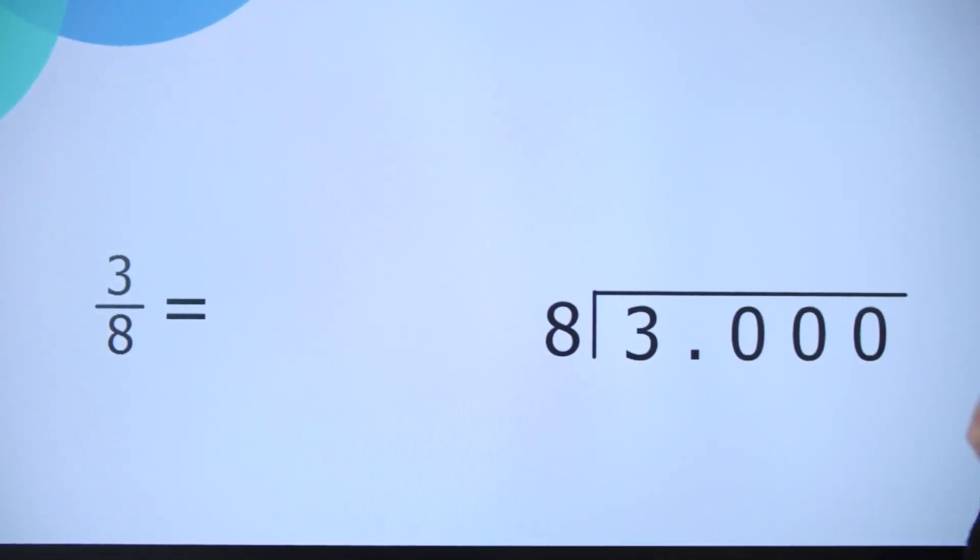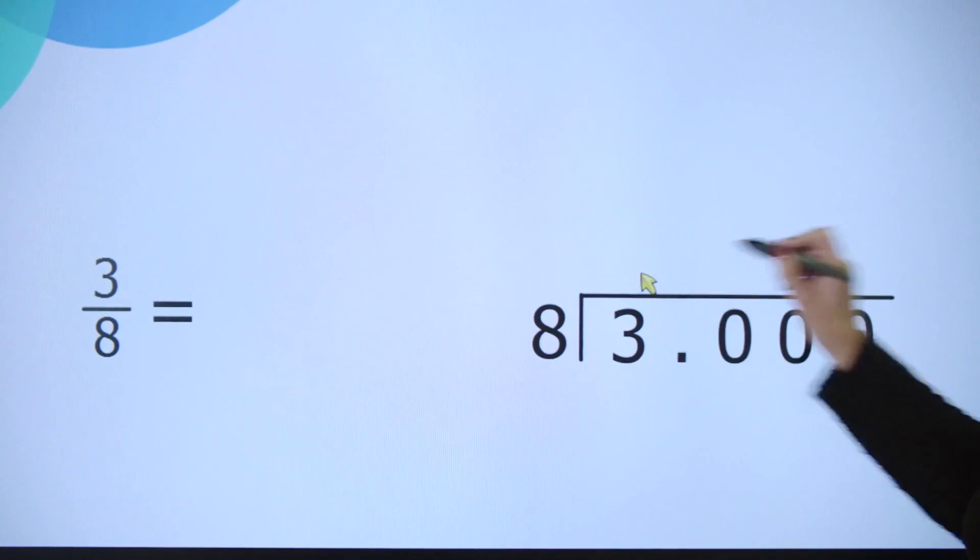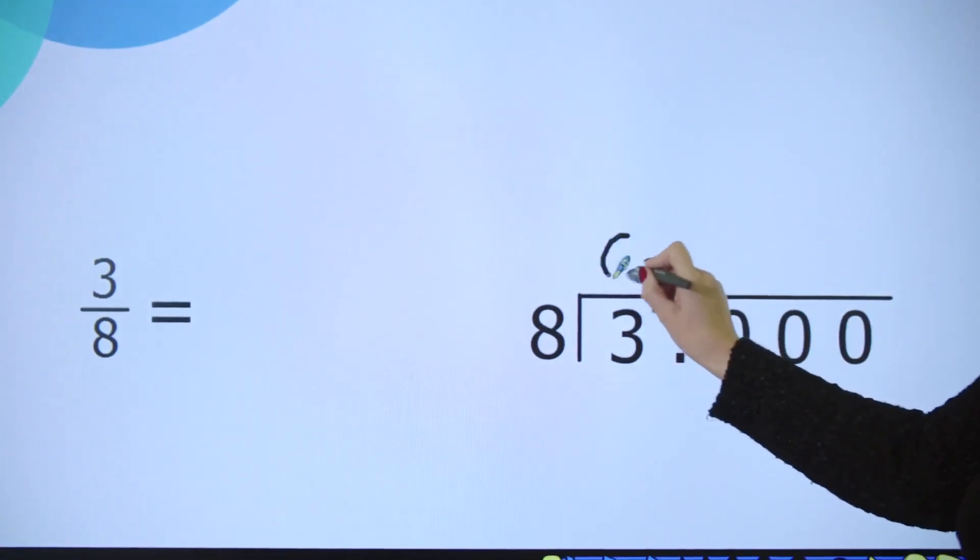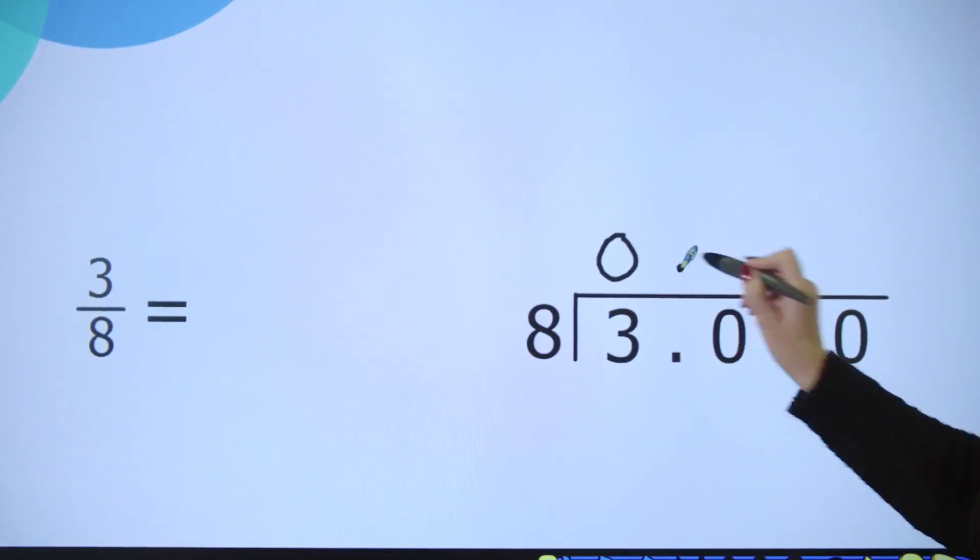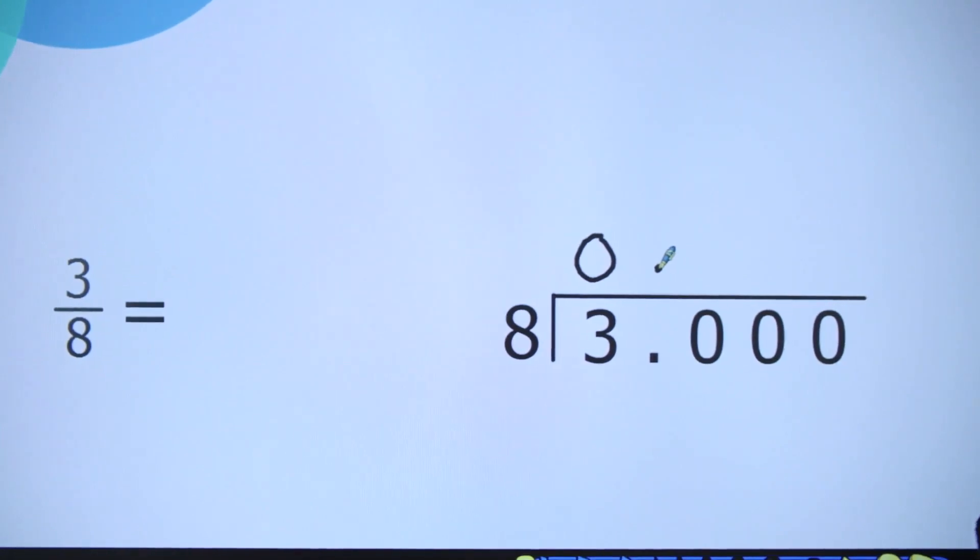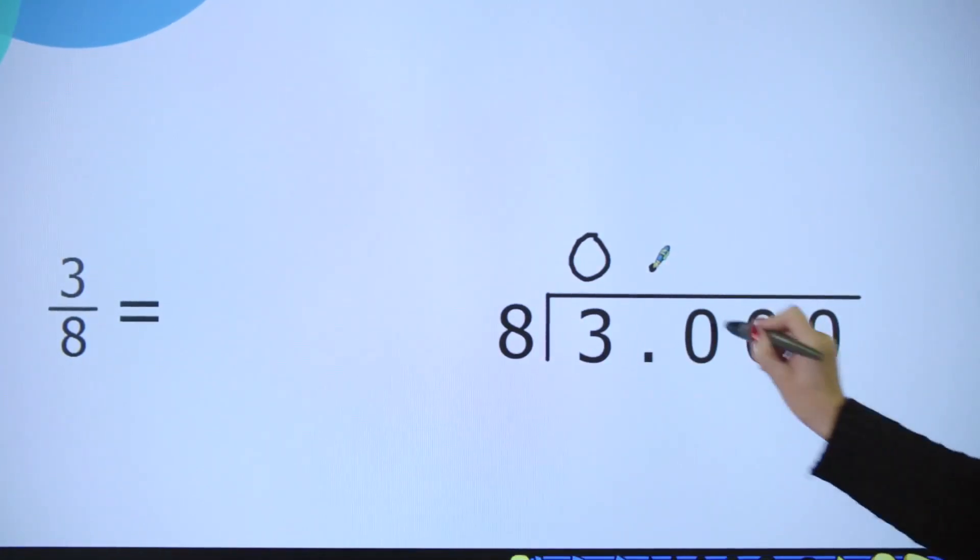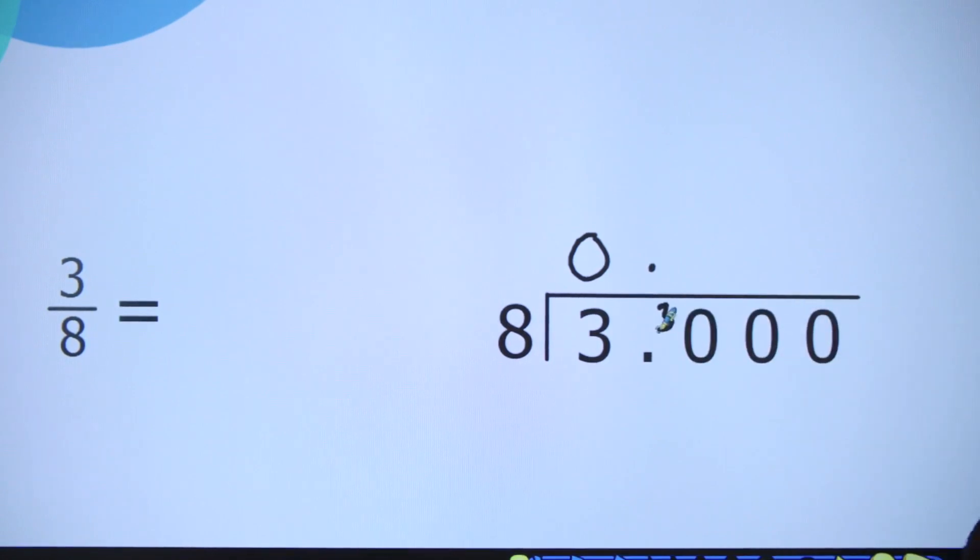How many eights go into 3? Well, there are zero, so I'm going to put my zero up here and make sure that I put my decimal point in, lined up with the other one. Now I'm going to carry my three ones over into the tenths column to give me 30 tenths.